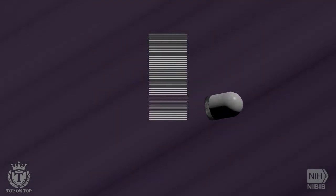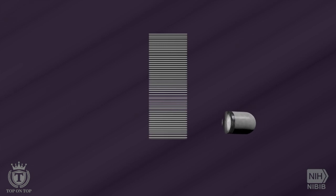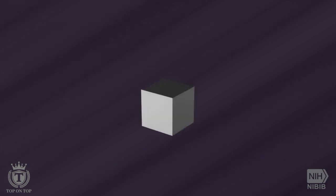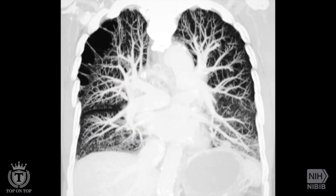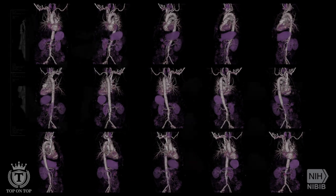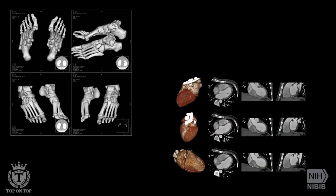A CT scan is an x-ray procedure that creates cross-sectional images with the help of computer processing. CT images are more detailed than conventional x-ray images and can reveal bones as well as soft tissue and organs.